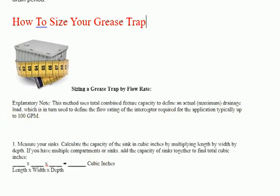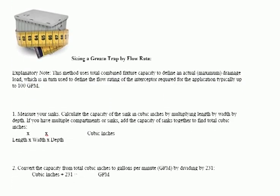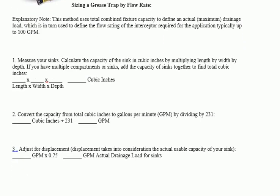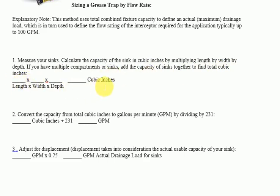Step 1 — Measure your sinks: Calculate the capacity of the sink in cubic inches by multiplying length by width by depth. If you have multiple compartments or sinks, add the capacities together to find total cubic inches.